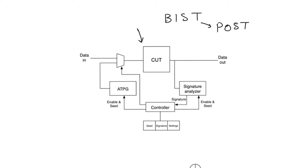Everything happens within the chip — everything drawn in this block diagram is within the boundaries of the chip core itself. The CUT is the circuit under test; this represents the non-design-for-testability part of the chip — the data path and controller. The input to the circuit under test is multiplexed between data inputs, which are the normal inputs of the chip (coming from off-chip pins or another part of the chip), and the test input. This test input doesn't come from a saved file or from somewhere offline as in the scan path technique.